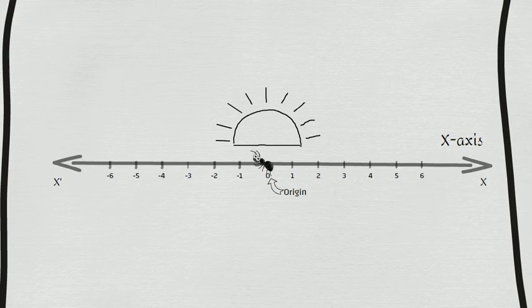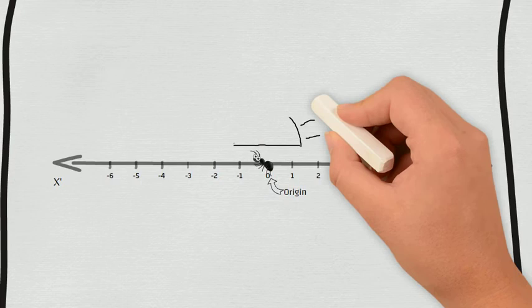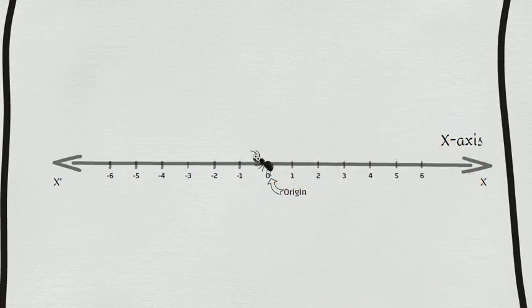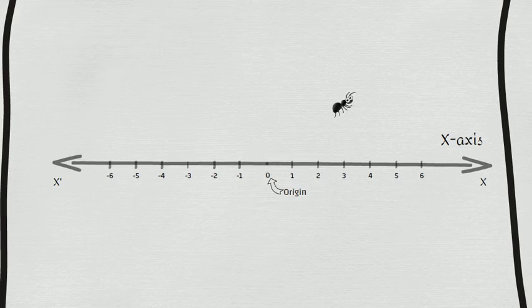Okay, now the little ant can walk back and forth along the number line, and we can use a simple number to locate it. But if the ant doesn't want to follow the line, how can we mark this location then?